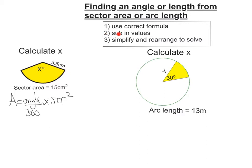Second, substitute in the values you know. The area is 15 centimetres squared, and the angle is called x, so we have: 15 equals x over 360 times pi times 3.5 squared.